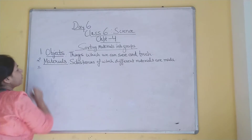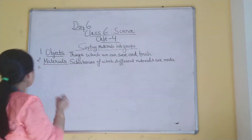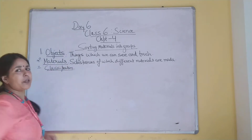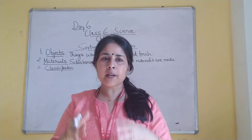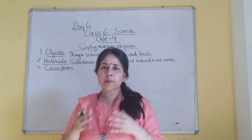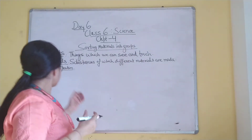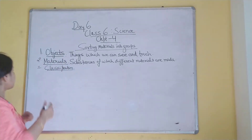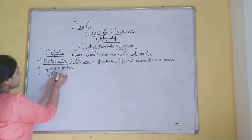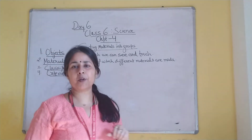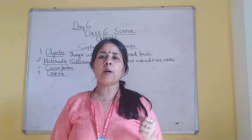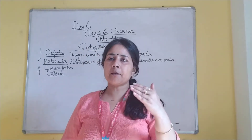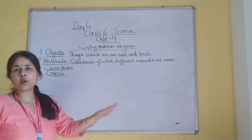Then we talked about classification. Classification is a process where we group similar objects together in a group. The criteria of classification can be any criteria — you can group different substances on the basis of their shape, utility, color, or the material they are made up of. These are different criteria which we can use, and it depends on our convenience.